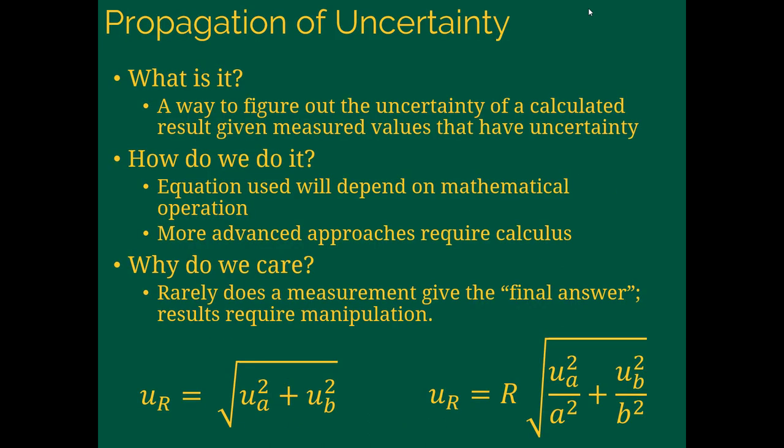So what this essentially means is propagation of uncertainty is a way to figure out the uncertainty of a calculated result if we've got measured values that also have uncertainty. We need to use two special equations depending on the math that we're doing. If we're doing addition or subtraction, we use that equation on the left. If we're using multiplication or division, then it's the equation on the right. More advanced approaches are going to require some calculus. In my types of classes, it's not going to happen.